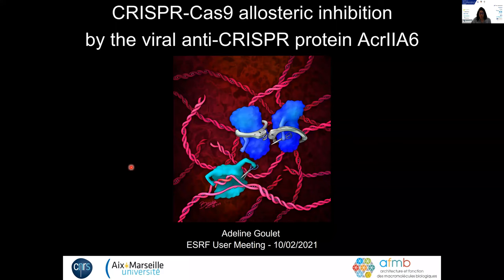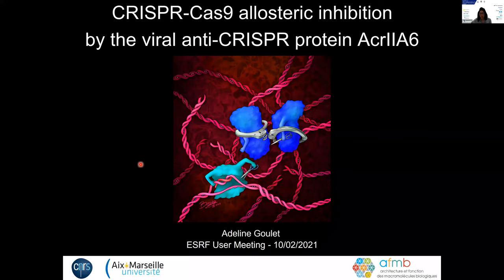Many thanks to the organizers for the invitation. I'm very pleased to attend this meeting. I'm the one who's going to close this day. For the last part, we are going to take a step back from eukaryotic viruses and have a look at the interactions between bacteriophages or phages and their bacterial preys. In particular, I'll show you how the viral anti-CRISPR protein called ACR2A6 uses a unique allosteric inhibition mode to inactivate the bacterial CRISPR-Cas9 immunity.